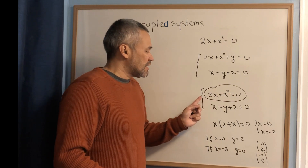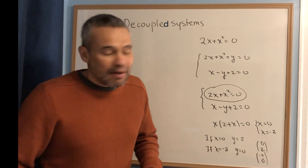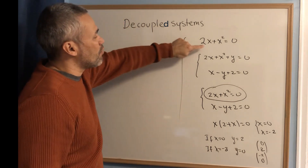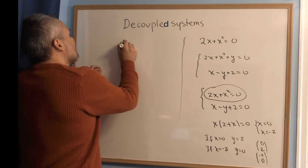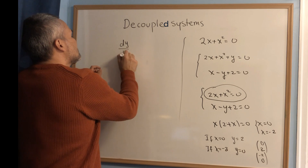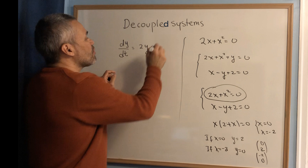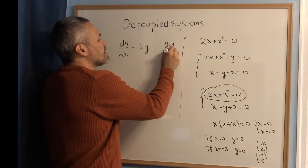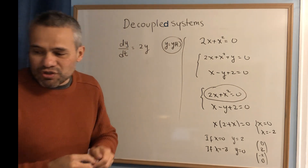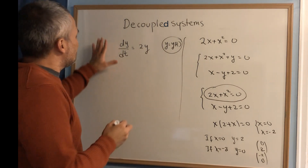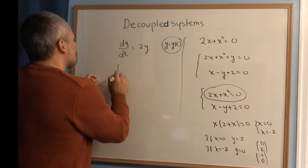The point is that when one of the equations doesn't have the two variables, it's easier — that's the reason it's called decoupled. In differential equations, we are looking not for numbers but for functions. Usually we have been looking for equations like dy/dt equals 2y, where y is a lazy way to denote y of t.